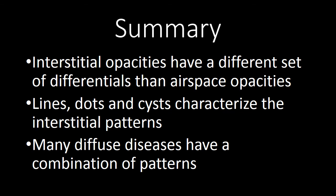In summary, interstitial opacities have a very unique differential compared to airspace opacities, so it's important to recognize when the primary pathology is involving the interstitium. Lines, dots, and cysts are the most common interstitial patterns — start to recognize those fine lines, fine dots, or cystic change in the lung, and compare that to the prior podcast on airspace opacities. Remember that many diffuse diseases have a combination of patterns, and if you can start to use the standardized language for describing findings in the lung, you can better interpret radiology reports and seek information in the literature more effectively when faced with unfamiliar findings.